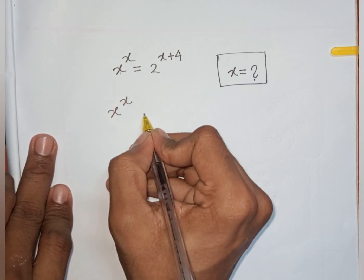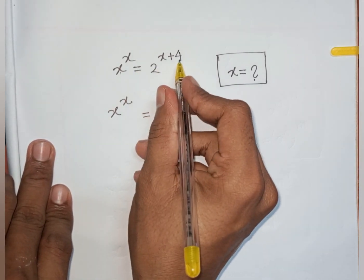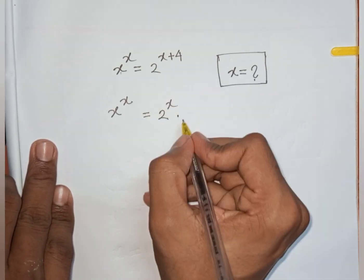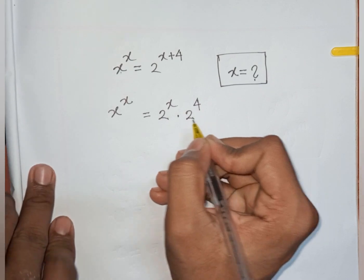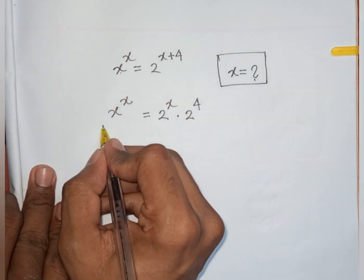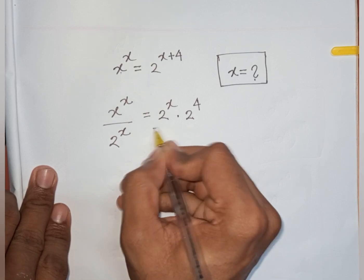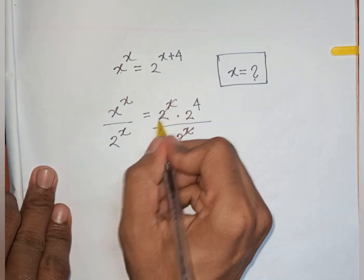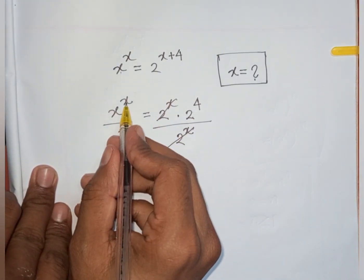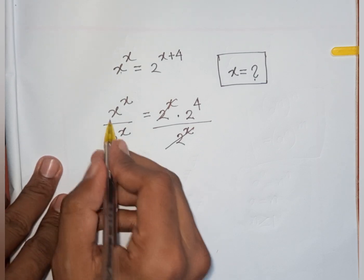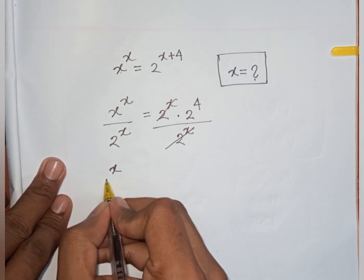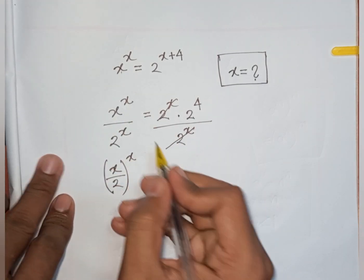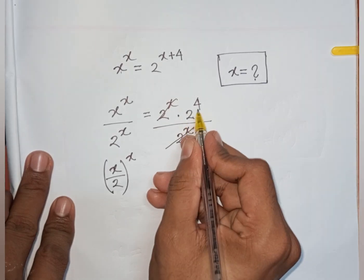x power x equals 2 power (x plus 4) can be written as 2 power x times 2 power 4. Now divide both sides by 2 power x, and using the same-power different-base rule, we write (x over 2) power x equals 2 power 4.